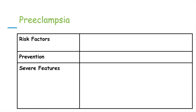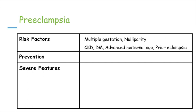Now let's take a closer look at preeclampsia to score even more points on your exam. Risk factors for preeclampsia can be divided into two groups: risk factors related to parity and gravity, and historical or non-modifiable risk factors. These include multiple gestation or nulliparity, chronic kidney disease, diabetes mellitus, advanced maternal age, and prior eclampsia. The prophylactic treatment for preeclampsia is low dose aspirin at 12 weeks, given to patients with a high risk of preeclampsia.